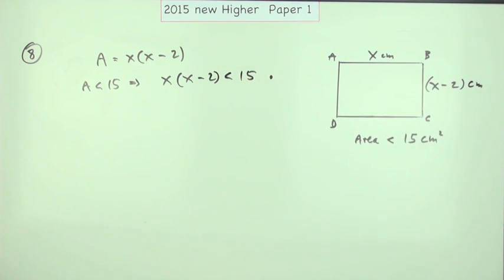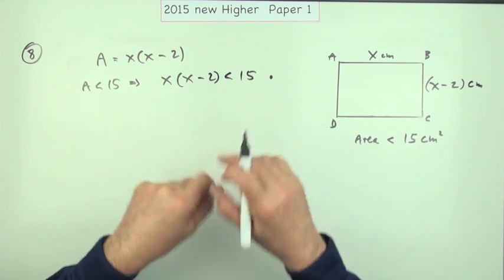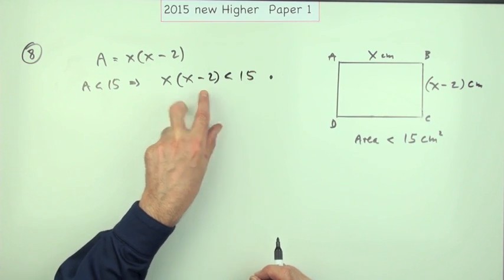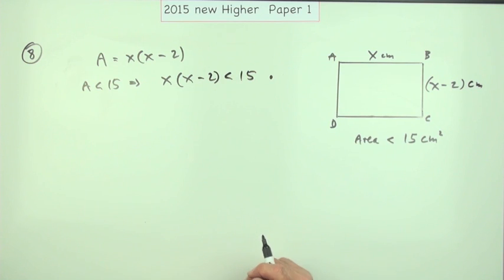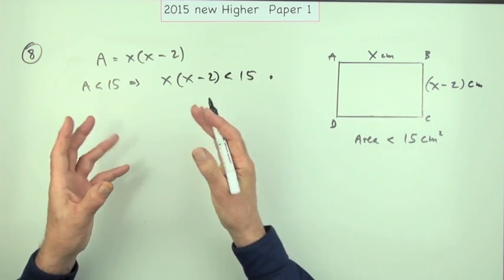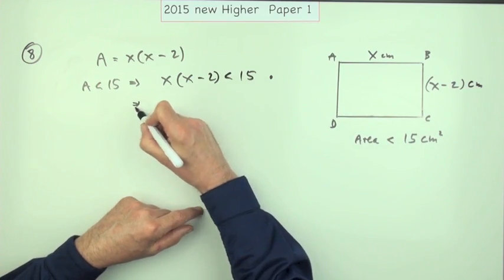Now there's a factorization which is of no use to you because it's not equated to zero, so that'll just have to get undone and everything brought over. So that then becomes x² - 2x - 15 < 0. There's the second mark.